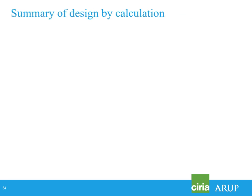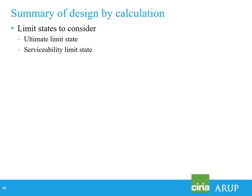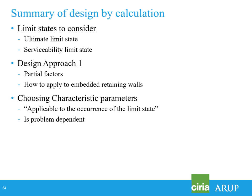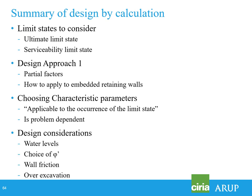So that's design by calculation — we covered limit states ULS and SLS, Design Approach 1 and how to apply partial factors to embedded retaining walls, particularly getting around the single source problem, how to choose characteristic parameters as a function of the limit state under consideration, and those four design considerations: choosing design water level, choice of phi, wall friction, and over-excavation.